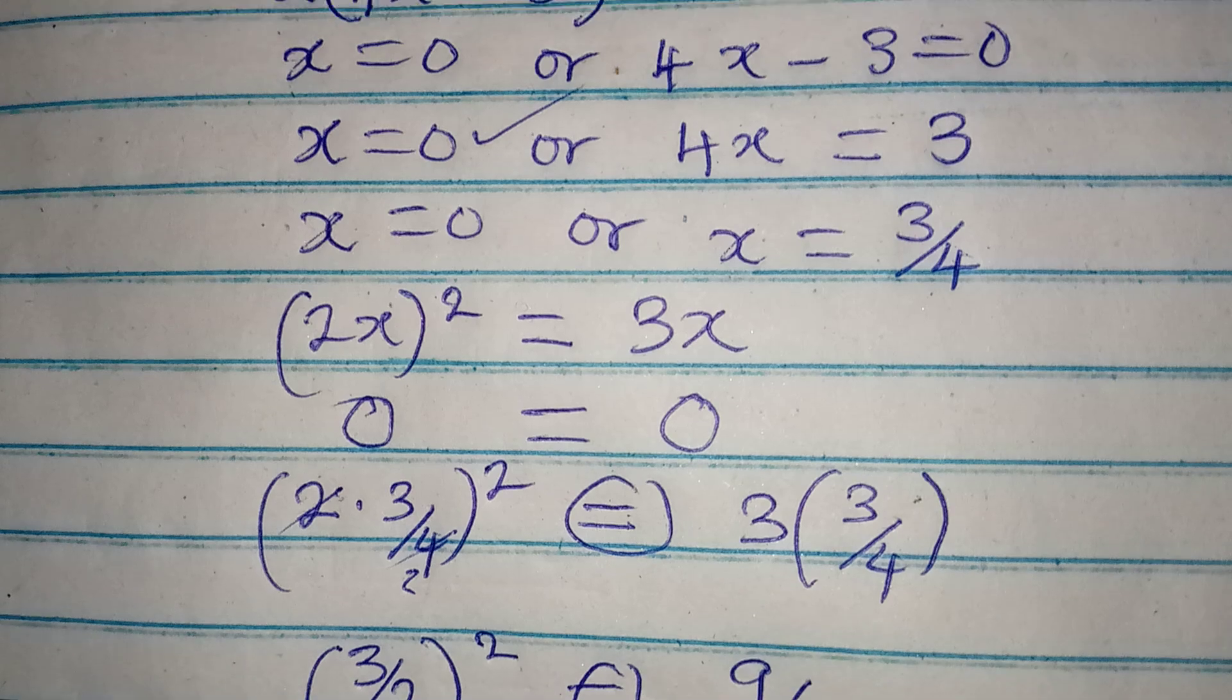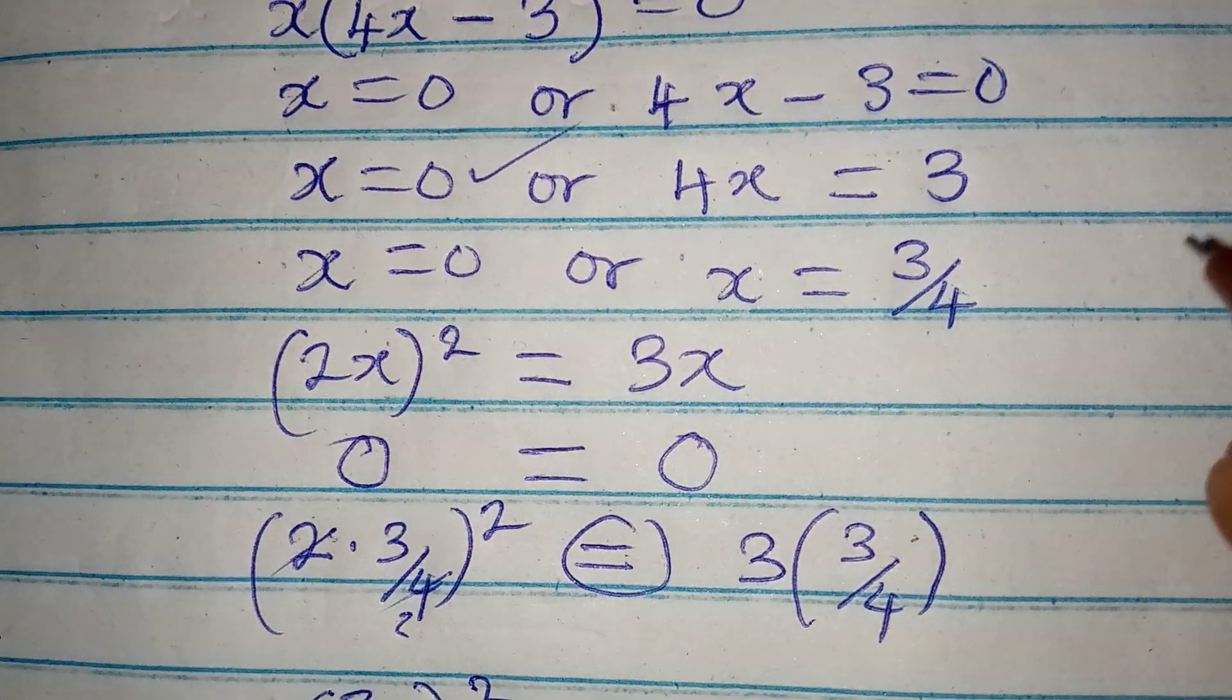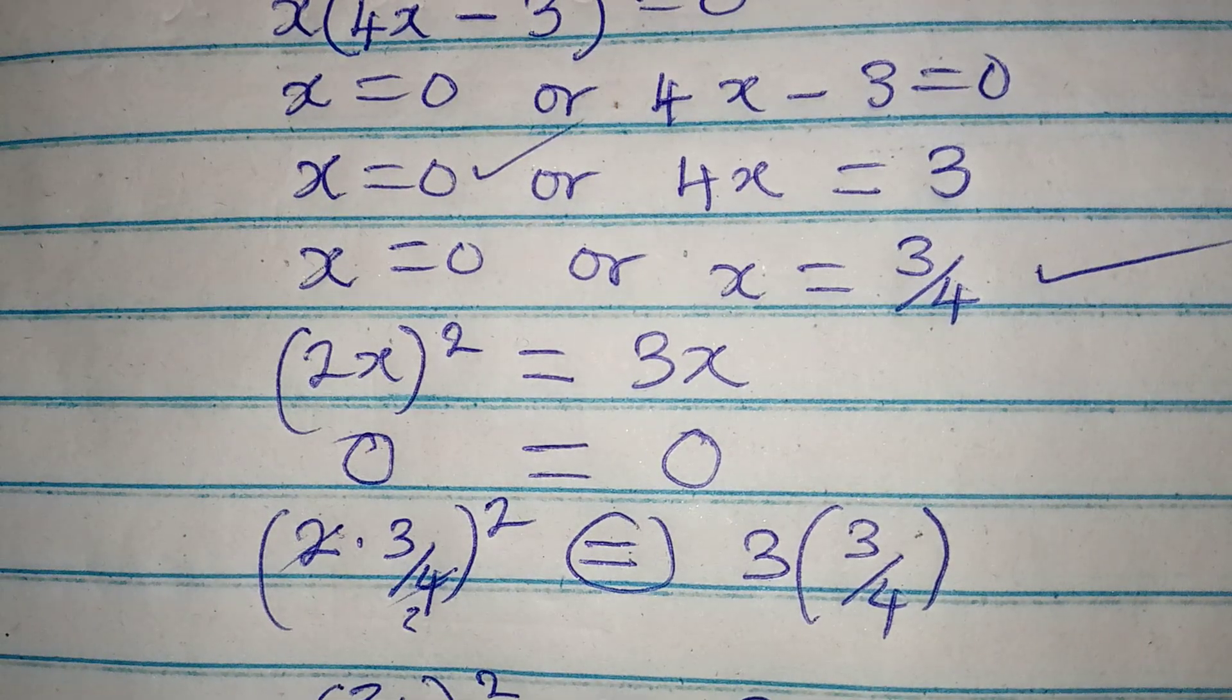So we are correct to say that x is equal to 0 or 3 over 4. Thank you for watching.